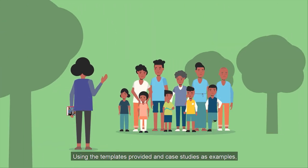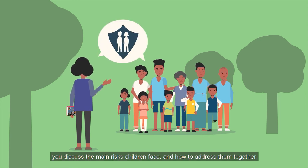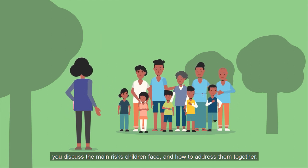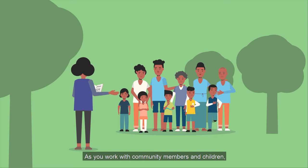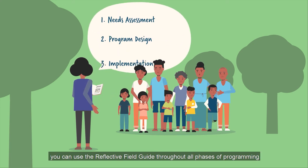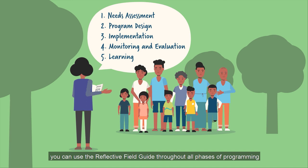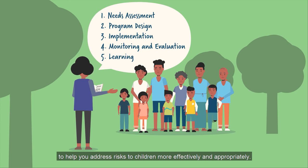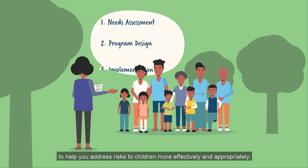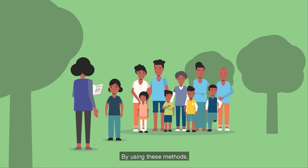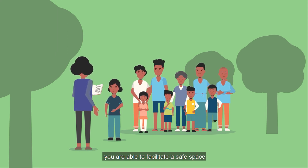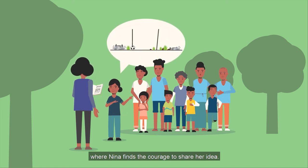Using the templates provided and case studies as examples, you discuss the main risks children face and how to address them together. As you work with community members and children, you can use the Reflective Field Guide throughout all phases of programming to help you address risks to children more effectively and appropriately. By using these methods, you are able to facilitate a safe space where Nina finds the courage to share her idea.